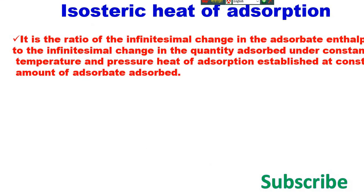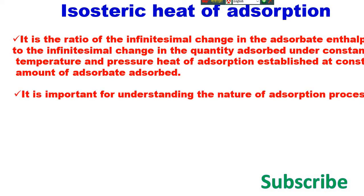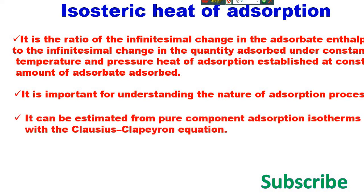Isosteric heat of adsorption is the ratio of the infinitesimal change in the adsorbed enthalpy to the infinitesimal change in the quantity adsorbed, under constant temperature and pressure — heat of adsorption established at constant amount adsorbed. It is important for understanding the nature of the adsorption process, and it can be estimated from pure component adsorption isotherms with the Clausius-Clapeyron equation.